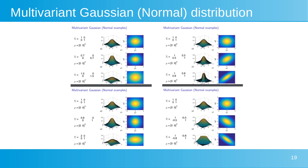This image contains visualizations illustrating the effects of different covariance matrices on a two-dimensional normal distribution, divided into four quadrants each containing three examples. The top-left quadrant shows the effect of changing diagonal values of the covariance matrix while keeping off-diagonal values at zero, meaning no correlation. The first graph is a standard Gaussian with unit variance and circular contour. Below, reduced variance makes the contour smaller but still circular. With increased variance, the contour enlarges but remains circular.